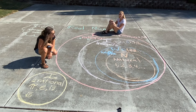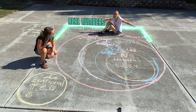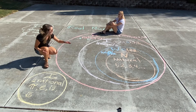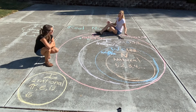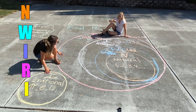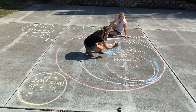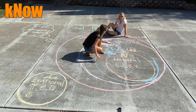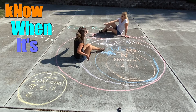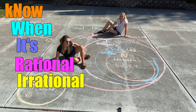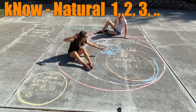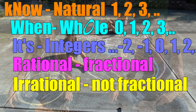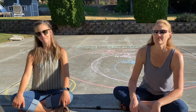So the entire real number line: natural, whole, integers, rational, and irrational. Let's look at those letters — N-W-I-R-I. So let's say N like 'know' — Know When It's Rational or Irrational. Know when it's rational, fractional, or irrational, not fractional. Know when it's rational, fractional, or irrational, not fractional.